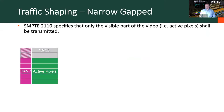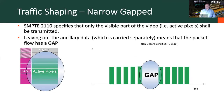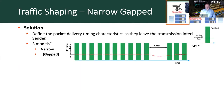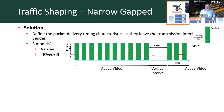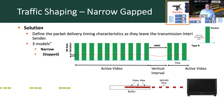SMPTE 2110 specifies that only the visible part of video — the active pixels — should be transmitted, leaving out the ancillary data which is carried separately as part of the 2110-40 stream. This means the packet flow has a gap. The narrow gap sender looks very much like an SDI stream but with the ancillary data and blanking removed. The packets come in nicely spaced in groups with a gap between frames, go into the video buffer, and are turned into a picture on the receiving device.